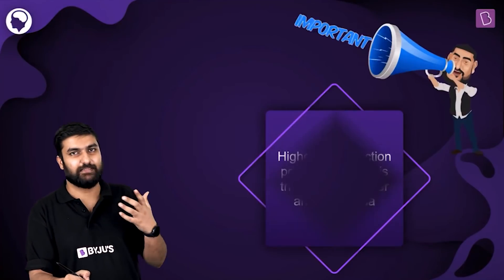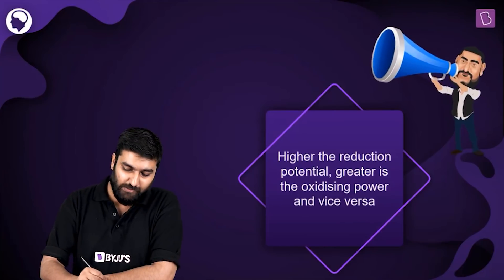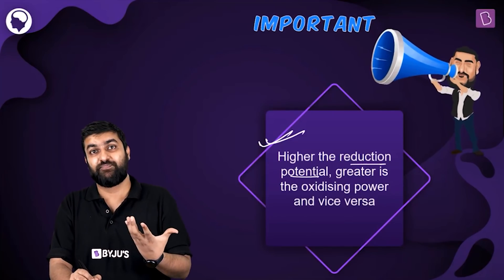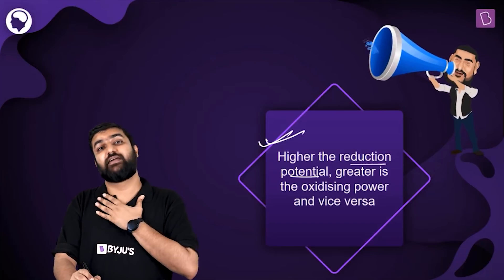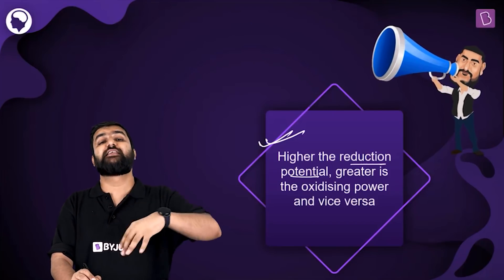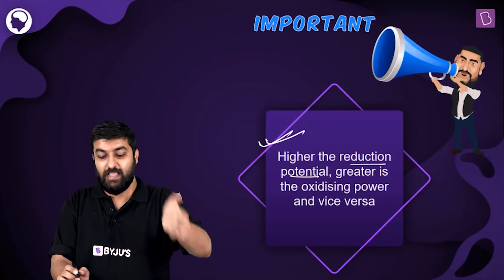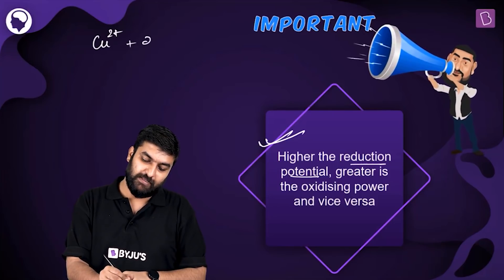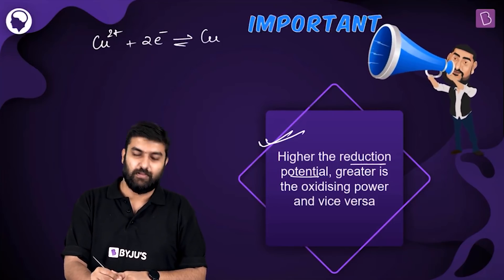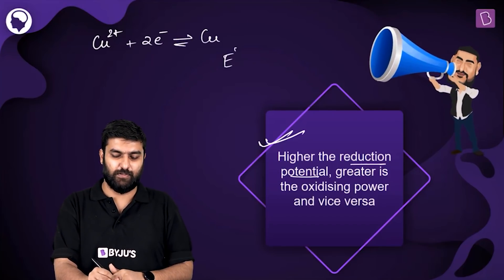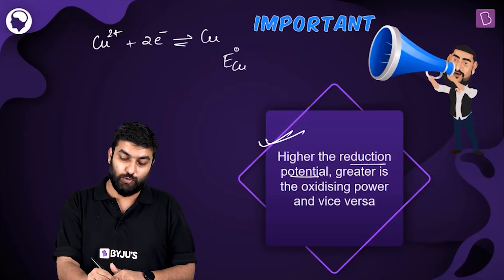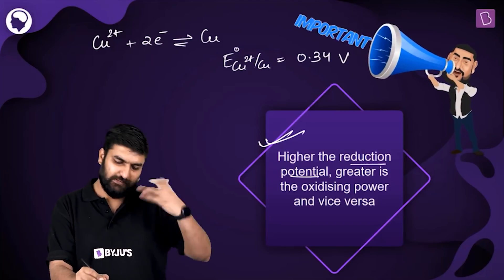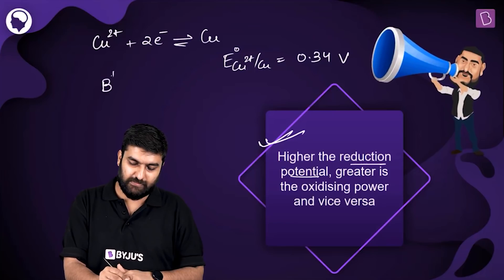This relationship holds for SOP and SRP as well. The key point is: higher the reduction potential, higher the tendency for that species to get reduced itself, making it a better oxidizing agent. For example, the standard reduction potential for Cu²⁺/Cu is 0.34 volts.